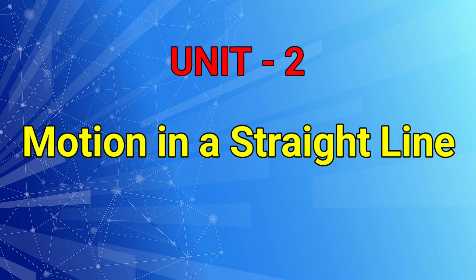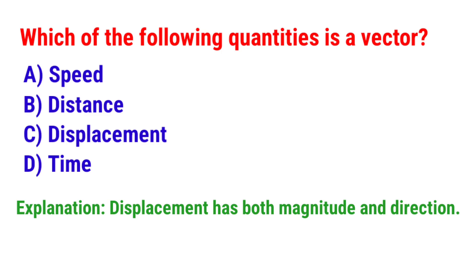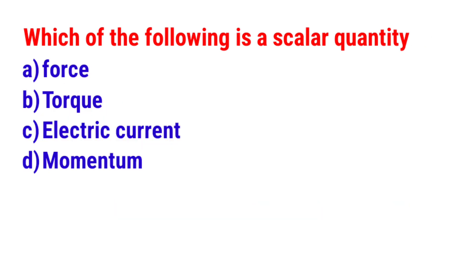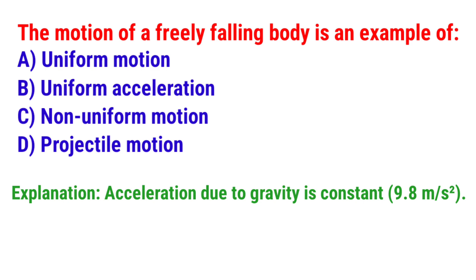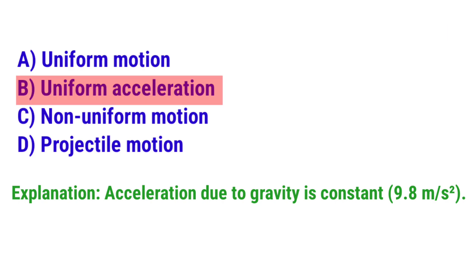Unit number 2: Motion in a Straight Line. Next question: Which of the following quantities is a vector? The answer is option C — Displacement. Next question: Which of the following is a scalar quantity? The answer is option C — Electric current. Next question: The motion of a freely falling body is an example of? The answer is option B — Uniform acceleration.